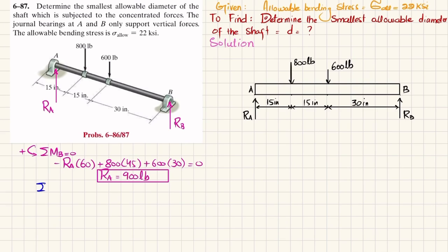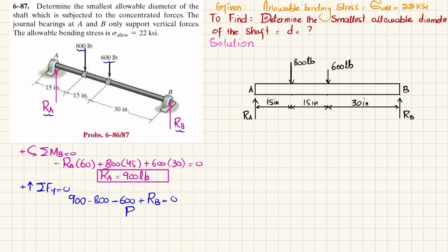Now we can find Rb using the equilibrium equation: the sum of all forces along the y-direction must equal zero, with upward forces taken as positive. So Ra + Rb − 800 − 600 = 0. Since Ra = 900: 900 − 800 − 600 + Rb = 0. From here, Rb = 500 pounds.